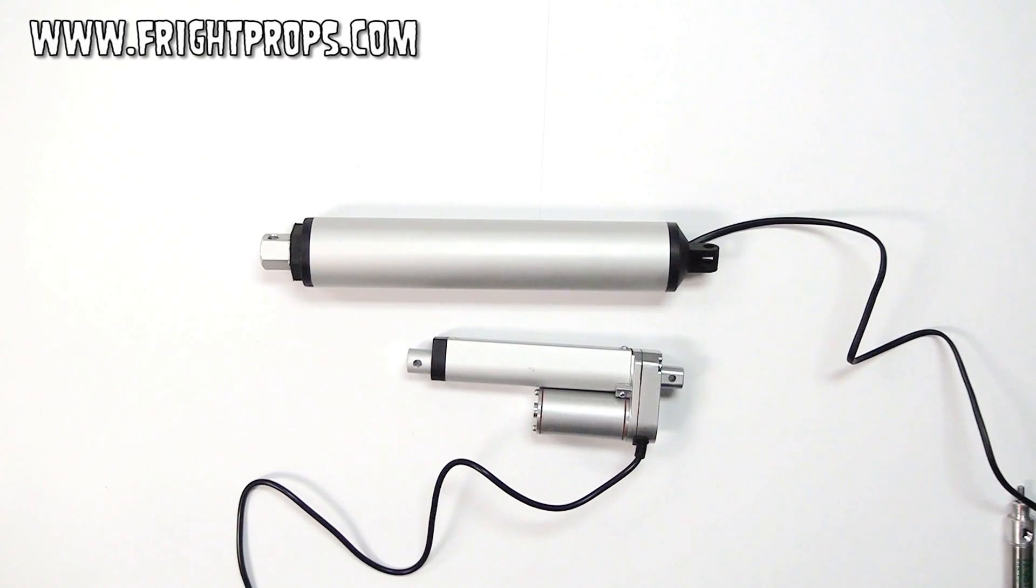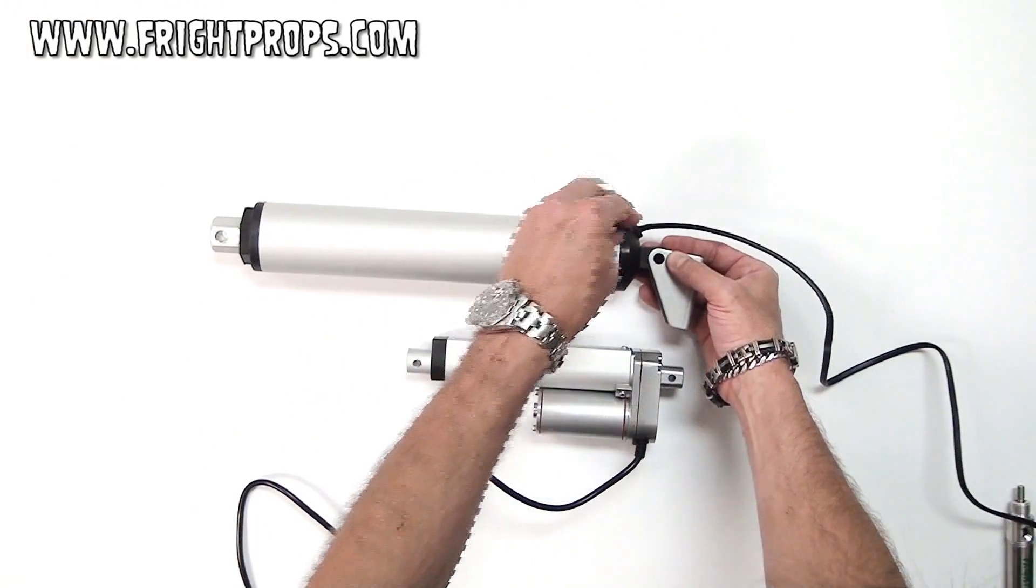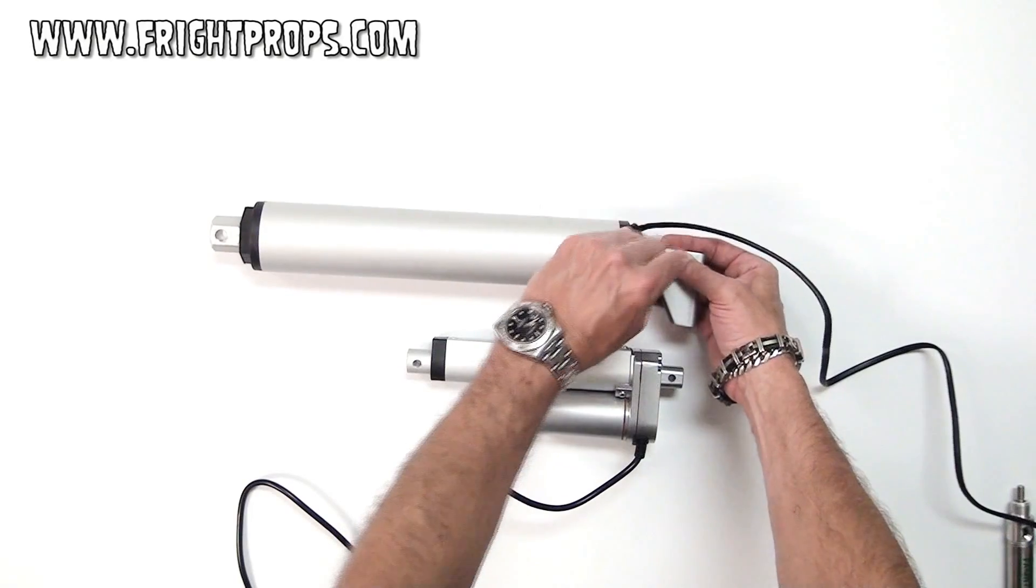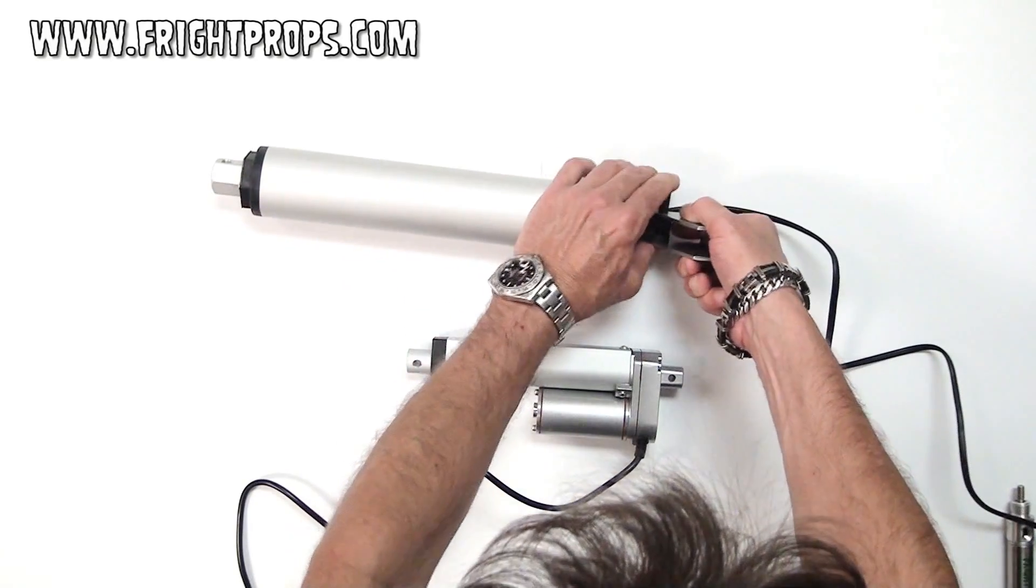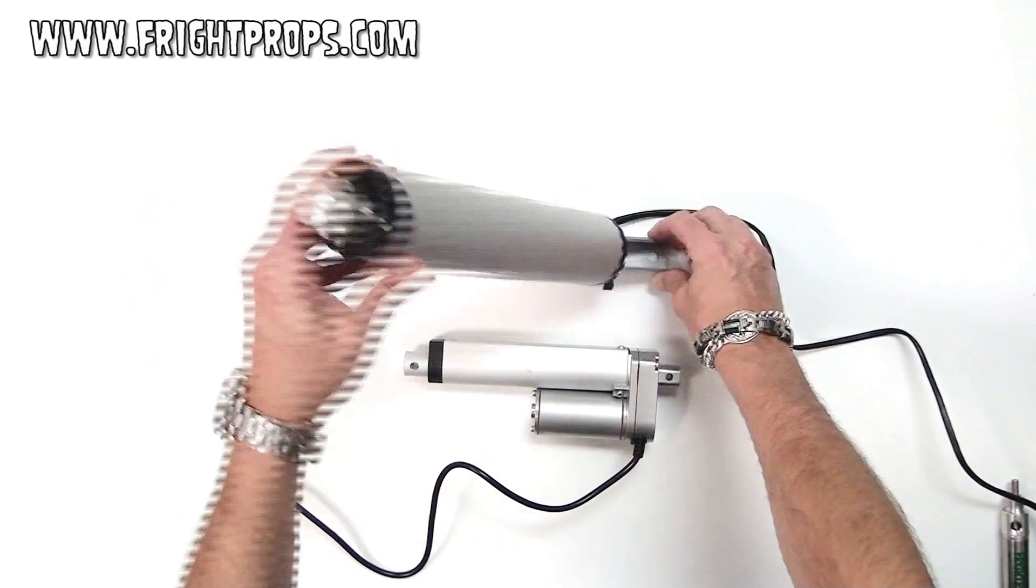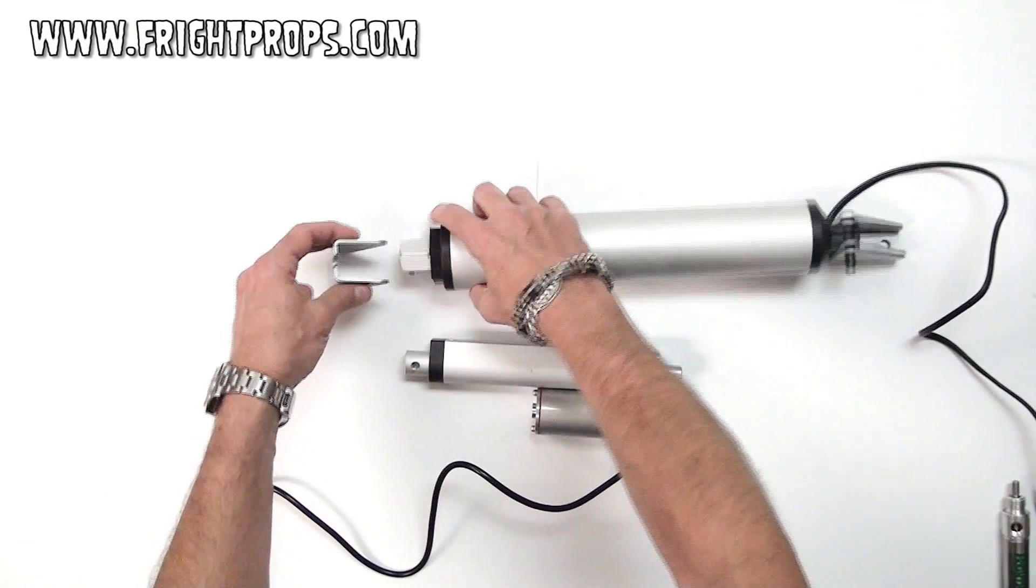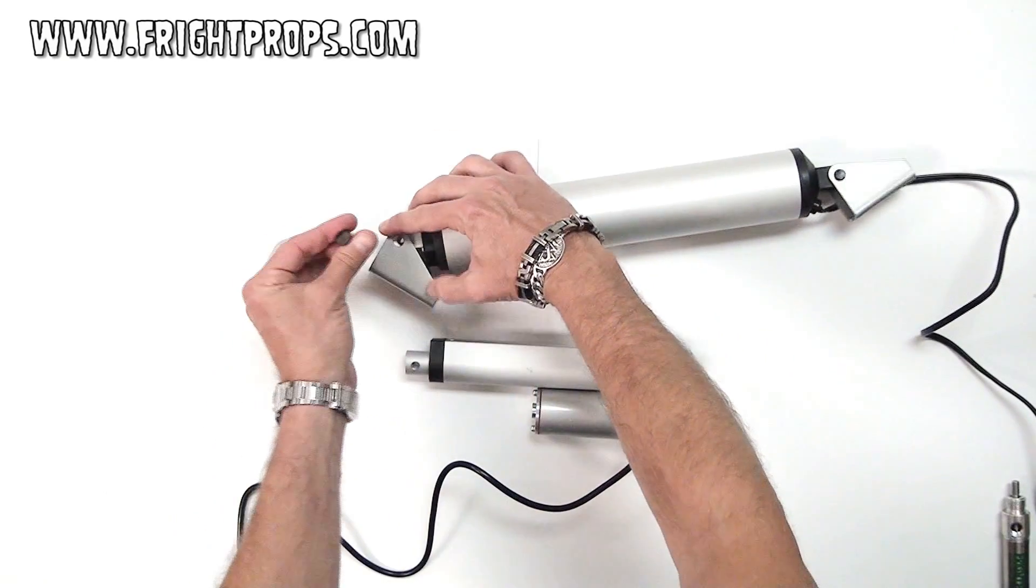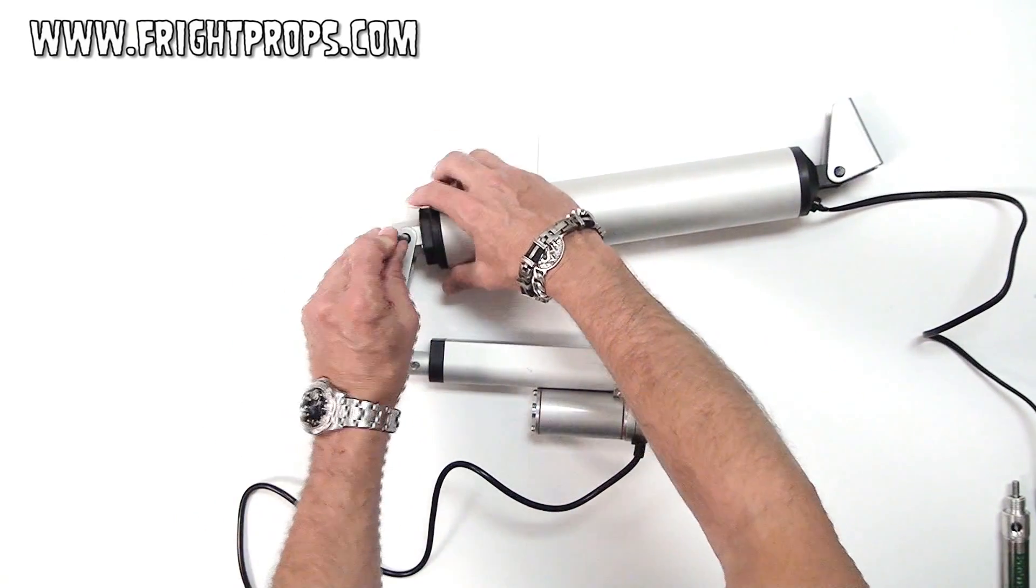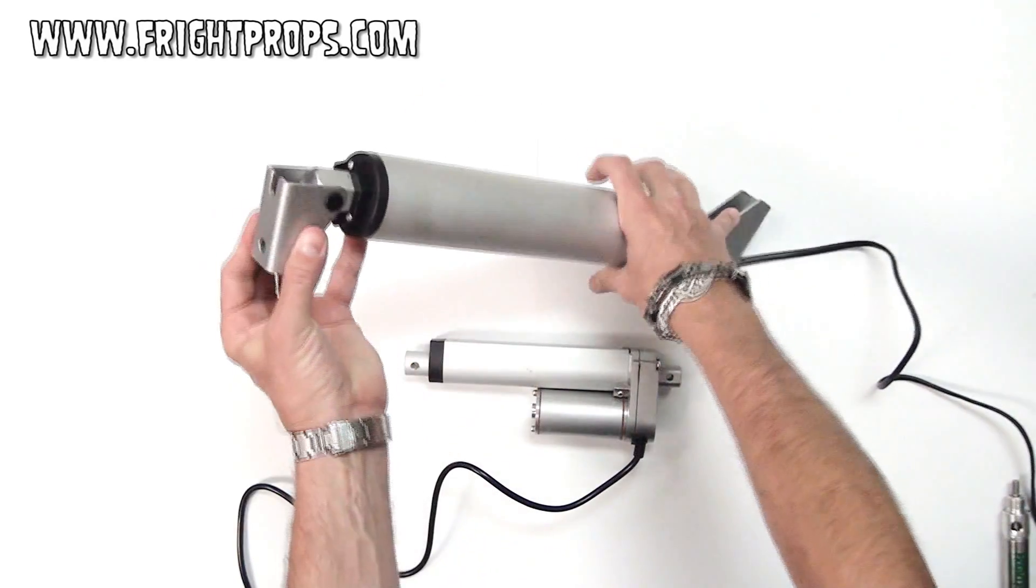In addition to activating the actuators, you'll need to mount and attach things to them. We offer some simple brackets for doing so. You simply put the rear bracket on by pushing the pin through. You can then attach it to something. And the same for the shaft. Very similar bracket. Just line up the holes. Push the pin through. And then you can attach that to your prop.